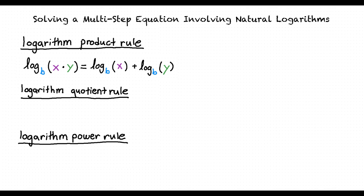The logarithm quotient rule states that the log of base b of x divided by y is equal to the log of base b of x minus the log of base b of y.